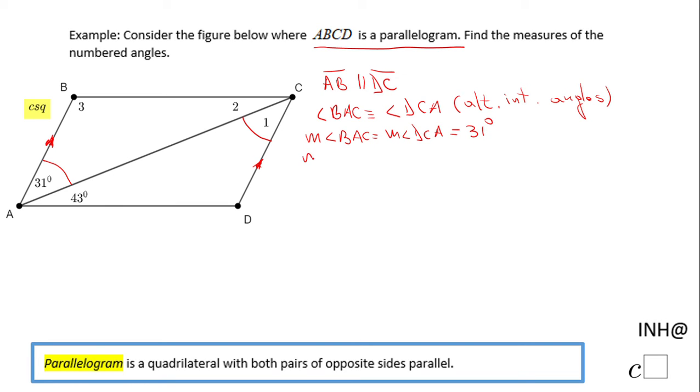So now we finish with angle 1. The measure of angle 1 is 31 degrees because angle 1 is nothing else than the angle DCA.